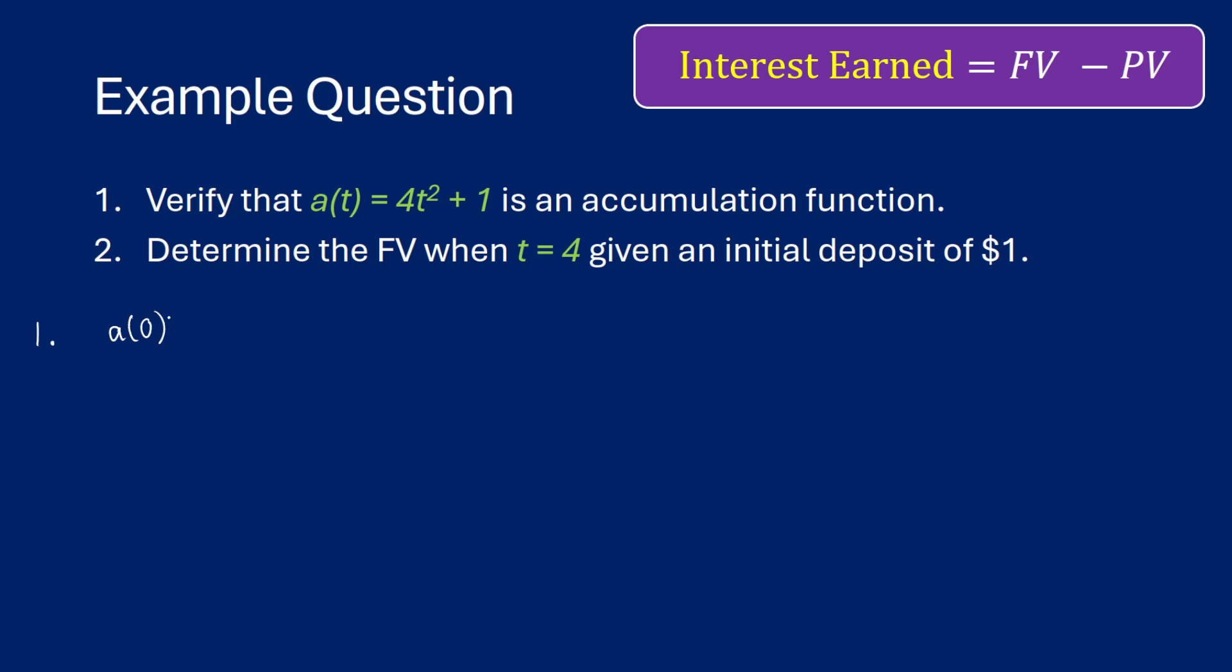So let's first show that this is an accumulation function. So a(0) should be equal to 1. So if we put in 0 for all of our t's, we're going to get 4 times 0² + 1, which is just going to be 0 + 1, which gets us 1. So yeah, our first step is quite good.